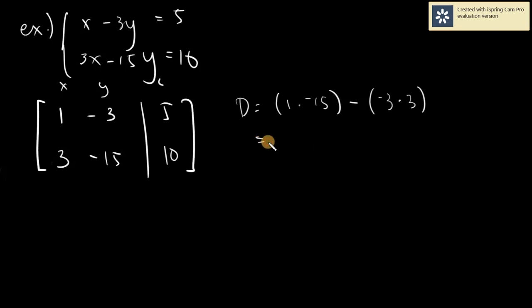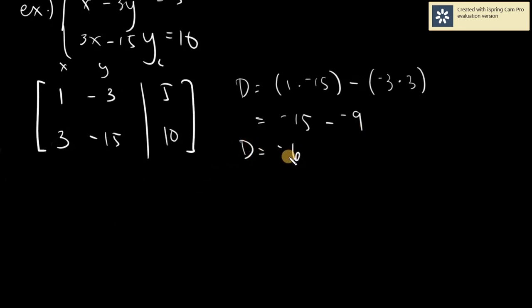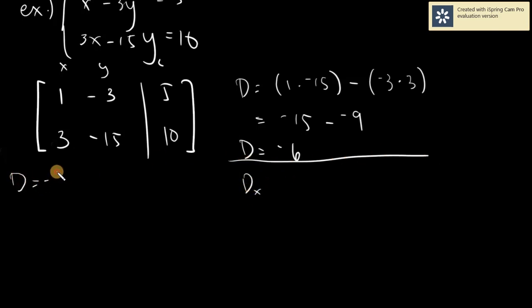That gives us negative 15 minus negative 9. Using the calculator: negative 15 minus negative 9 gives negative 6. So D is equal to negative 6.